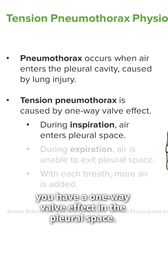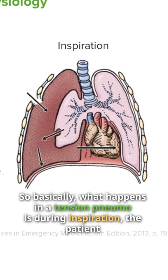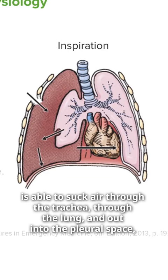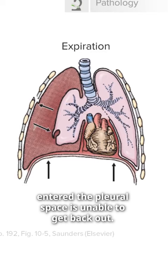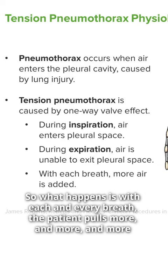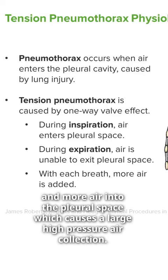Basically, what happens in a tension pneumo is during inspiration, the patient is able to suck air through the trachea, through the lung, and out into the pleural space. But then during expiration, that one-way valve slams shut and the air that entered the pleural space is unable to get back out. So with each and every breath, the patient pulls more and more air into the pleural space, which causes a large, high-pressure air collection.